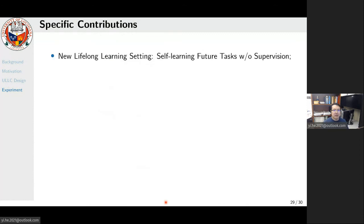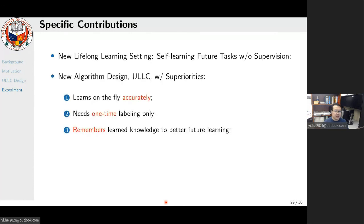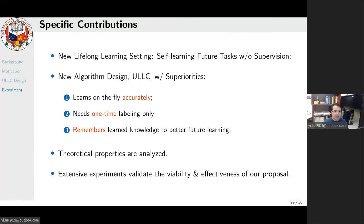To summarize, we have made three contributions in this work. First, we explored a new lifelong learning setting, and the key is how to train a self-learning machine for future tasks without label supervision. Second, we designed a new learning algorithm termed ULLC, whose key features are that it can learn on-the-fly accurately, it needs one-time labeling only, and it remembers knowledge to better future learning. Third, we have analyzed theoretical properties, which can be referred to in our paper and supplementary, and we have carried out extensive experiments to validate the viability and effectiveness of our proposal.